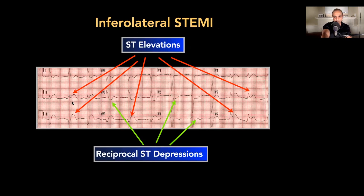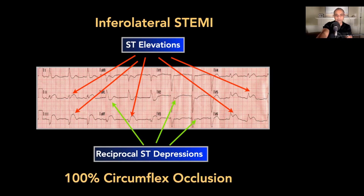The inferior leads showed elevations in leads II, III, and aVF, and in leads V5 and V6, with depressions in leads V2 and V3. The patient turned out to have a 100% circumflex occlusion, got a stent, and ended up just fine.